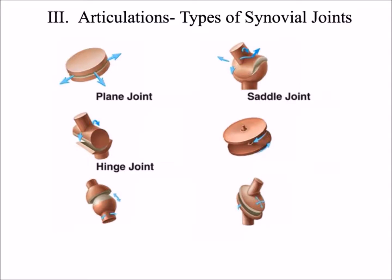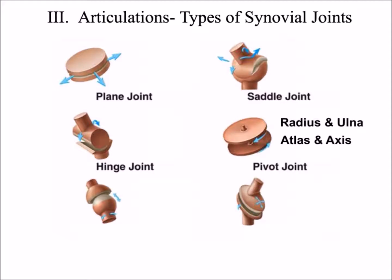The fourth type of synovial joint is the pivot joint, where one bone rotates about the other. Examples include the joint between the radius and ulna, and the joint between the first two vertebrae of the vertebral column, called the atlas and axis.